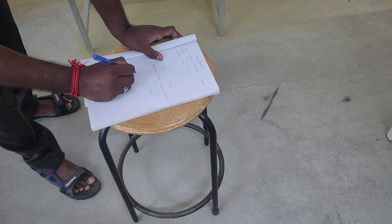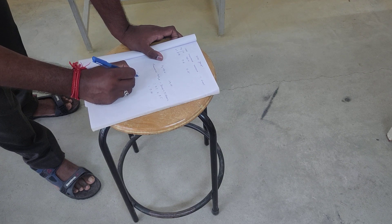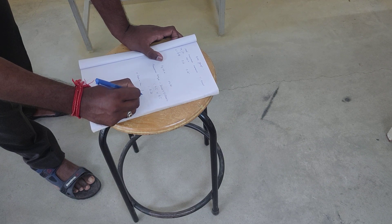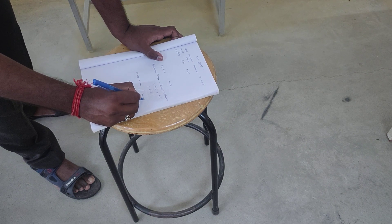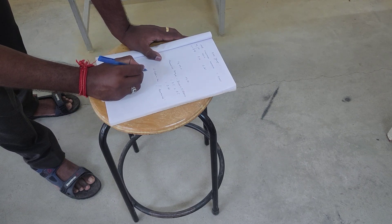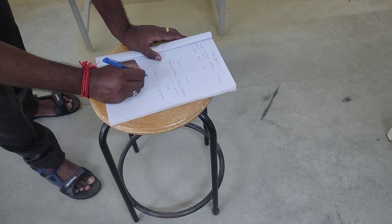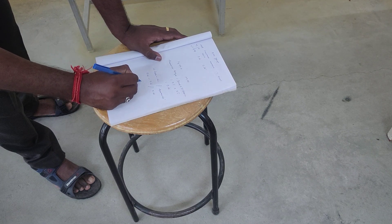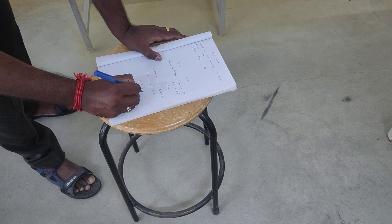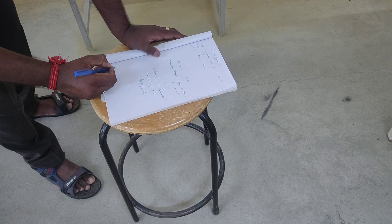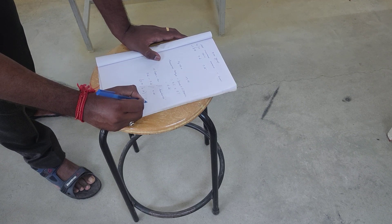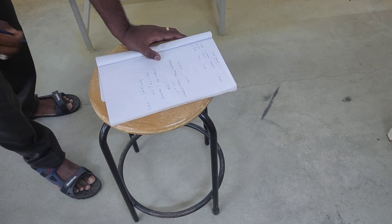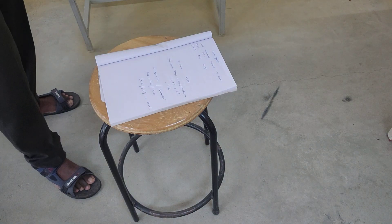The percentage error is nothing but difference in value of experimental to theoretical divided by theoretical value. So the difference is 0.25 minus 0.2 divided by 0.25. That shows 0.05 divided by 0.25. This is nothing but 0.2 or 20% error available in the torque converter.